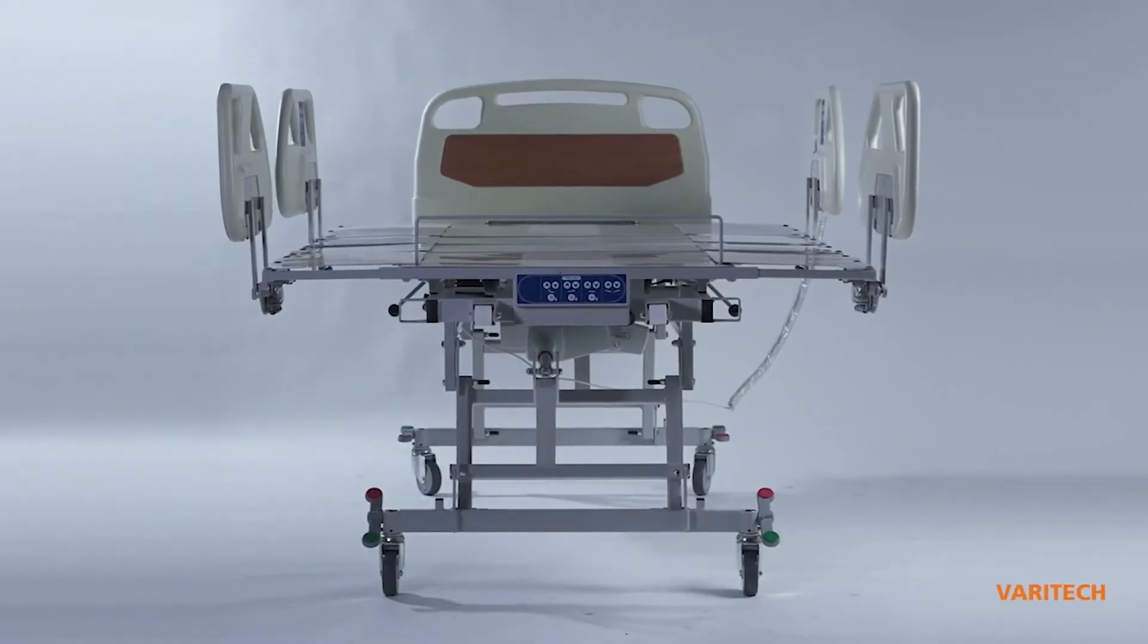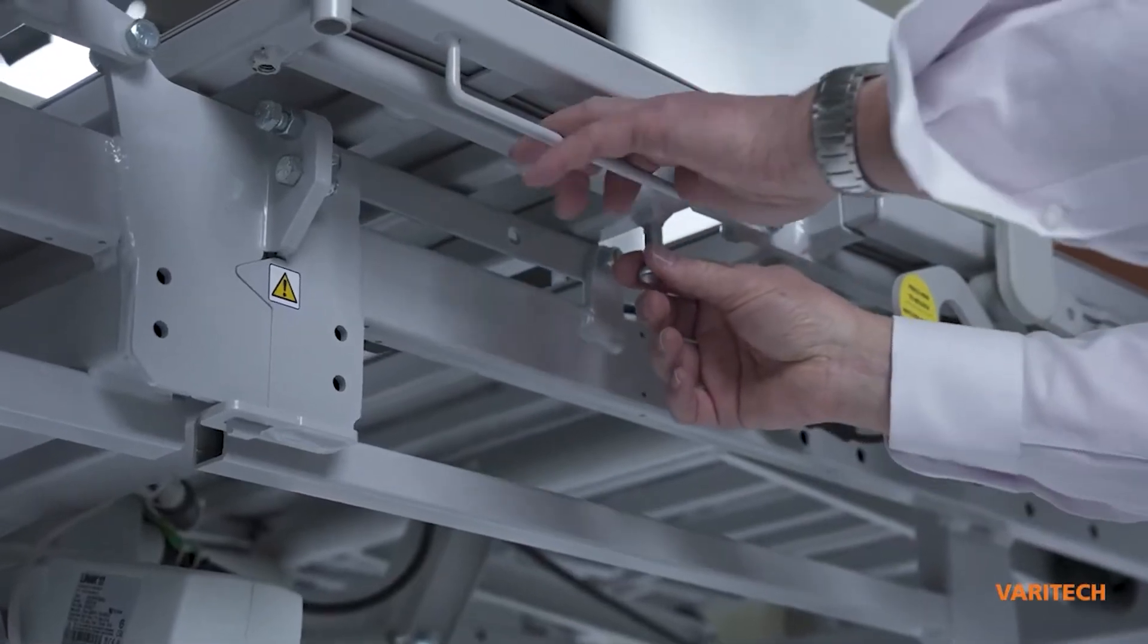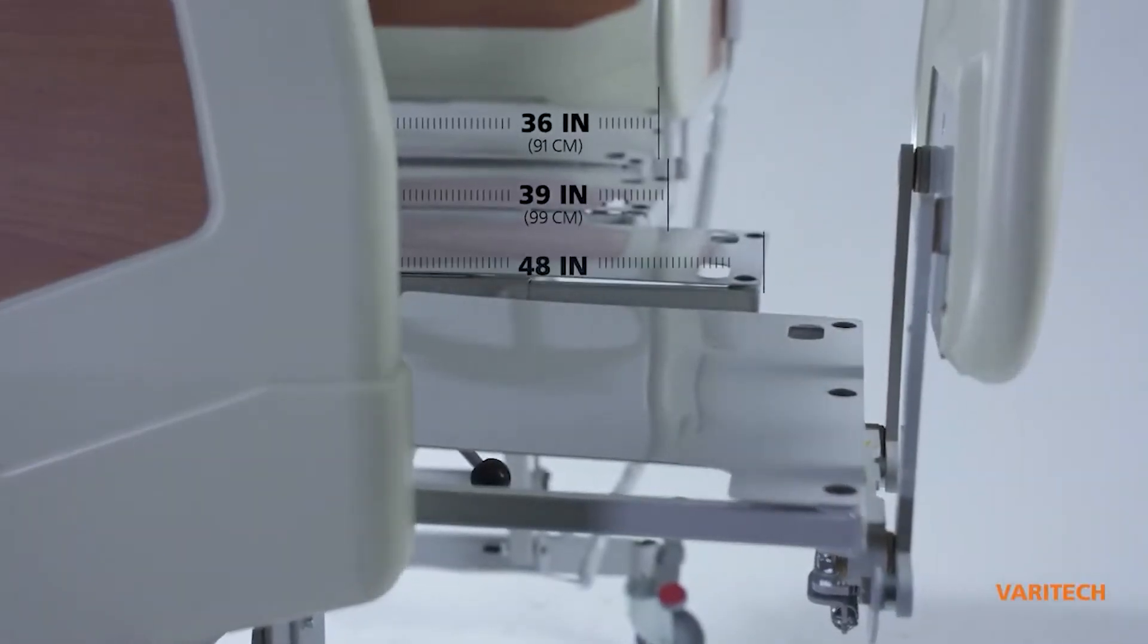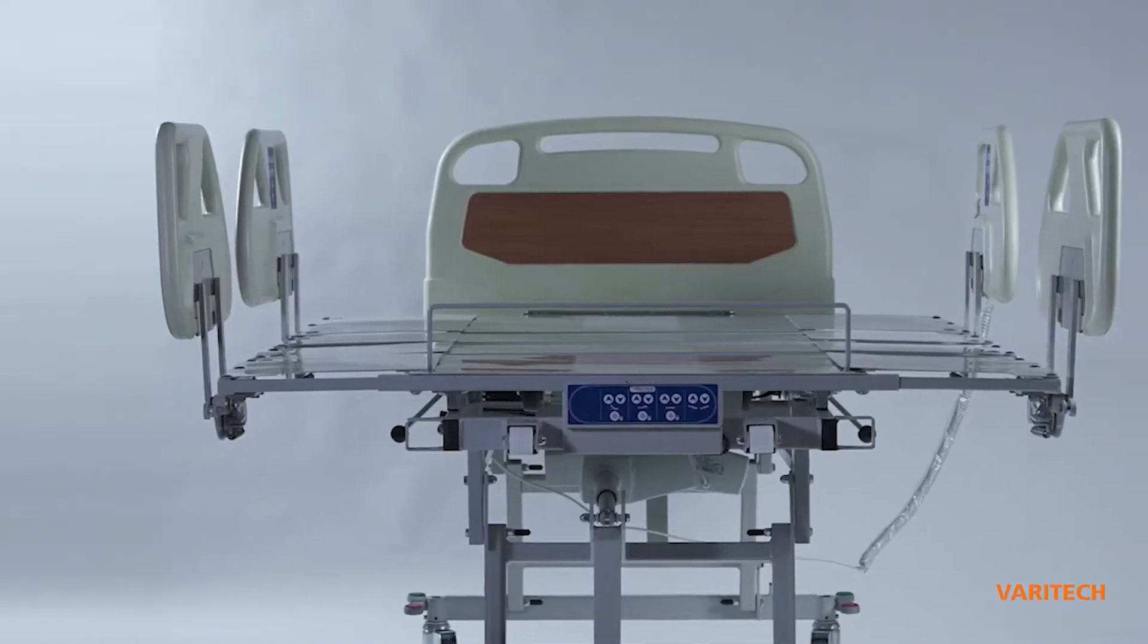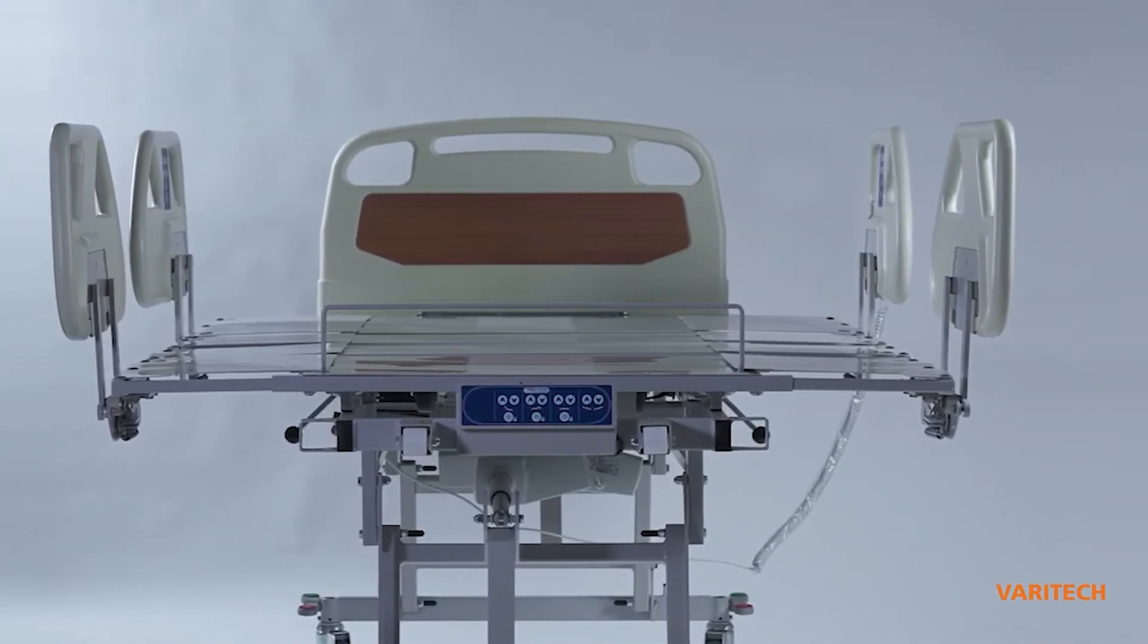The Varitek platform can easily expand in width with plungers on every section of the platform from 36 inches to 39 inches to 48 inches and up to 54 inches without tools. The Varitek can thus be used for both a patient of regular weight and heavier patient.